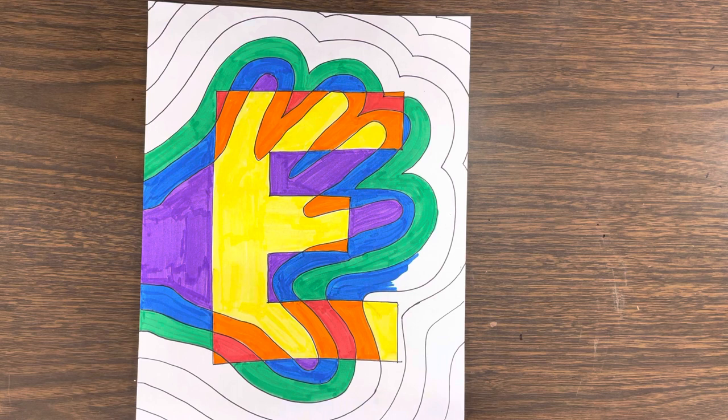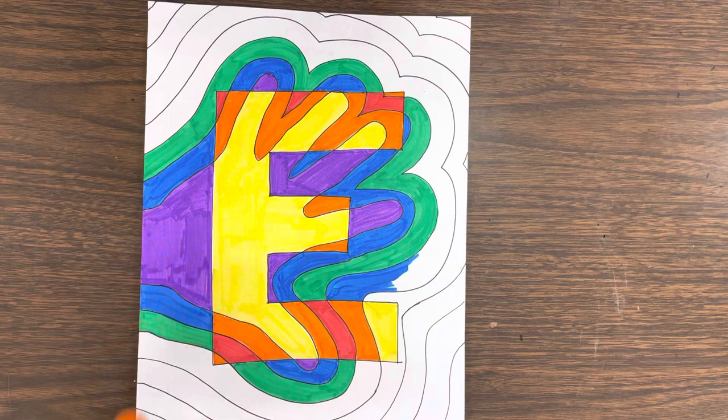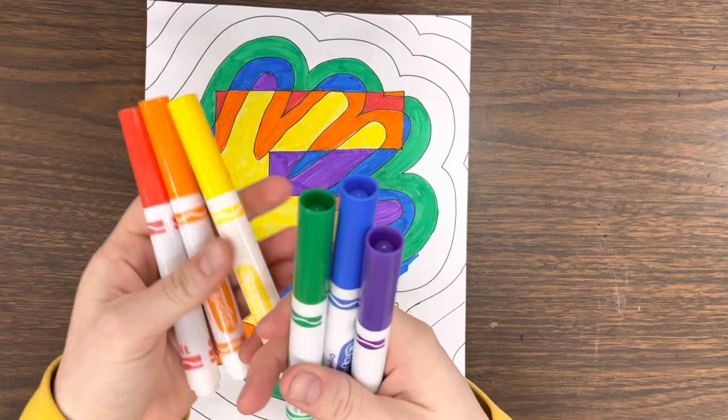For those of you who need a little ketchup, not mustard, just ketchup. I'm just kidding. These are the warm colors: red, orange, and yellow. And these are the cool colors: green, blue, and purple.